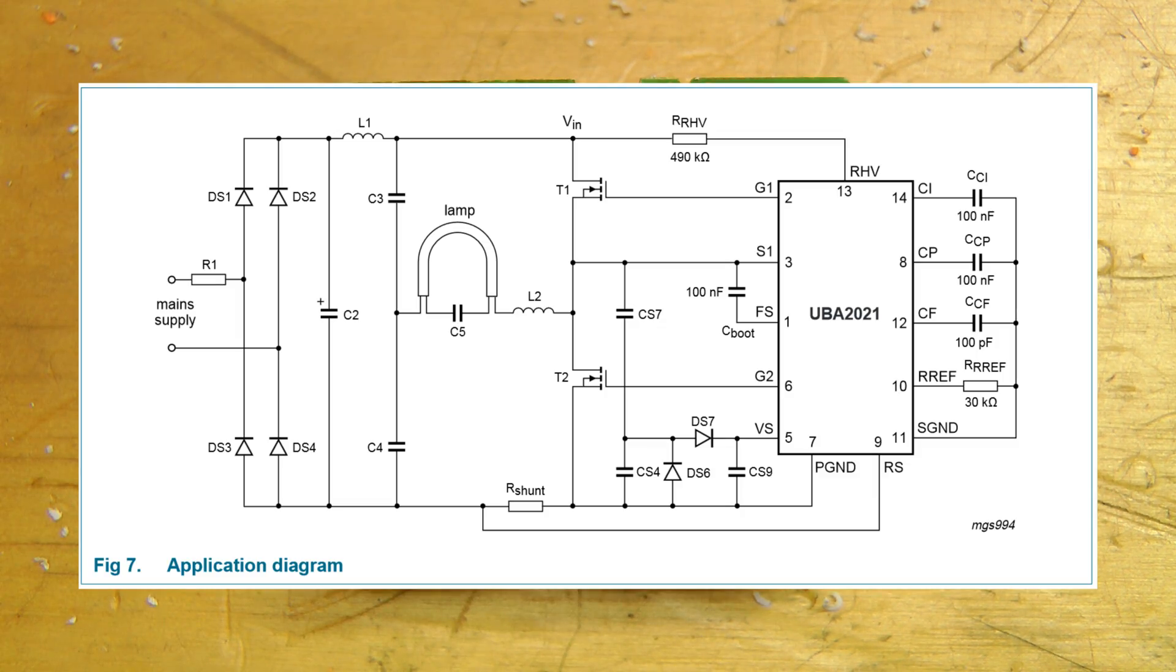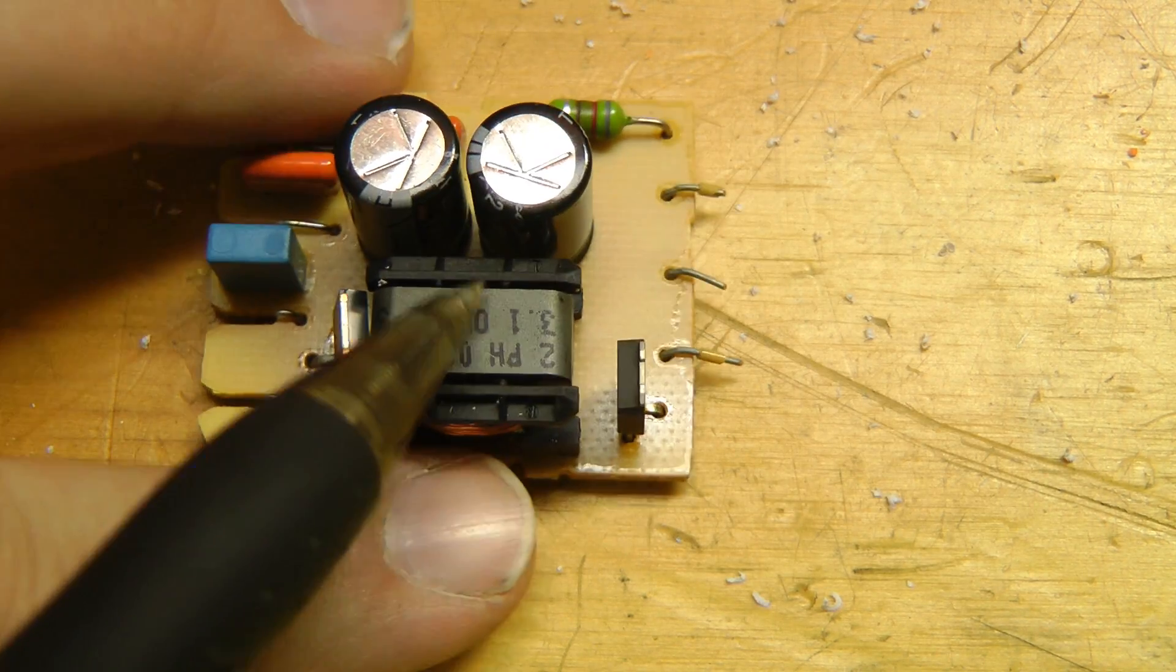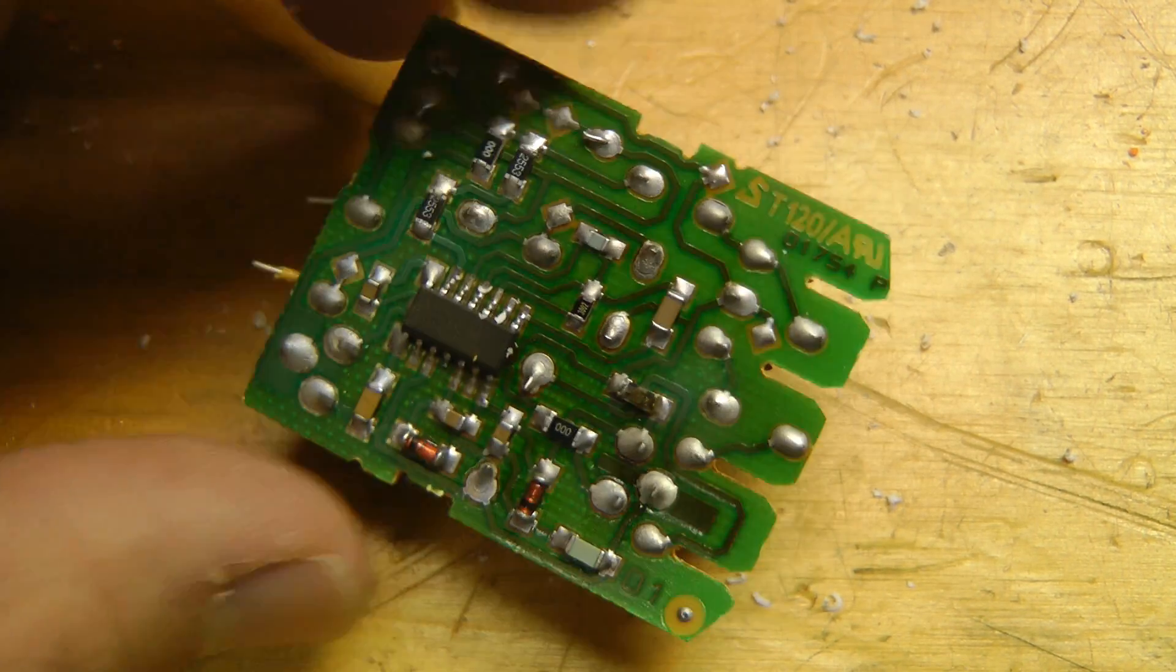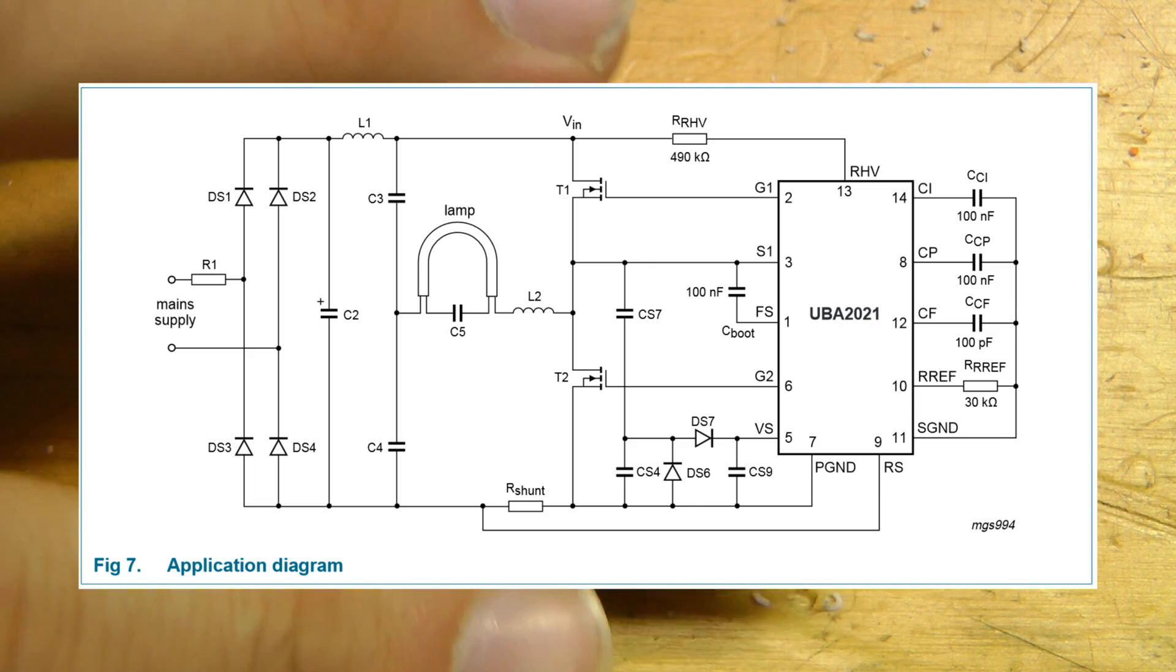The datasheet for the driver IC has this schematic and it pretty much matches what's on this board of course. L2 on the schematic is obviously the main inductor here, two transistors. This actually has a high side driver so the FETs are driven pretty nicely.